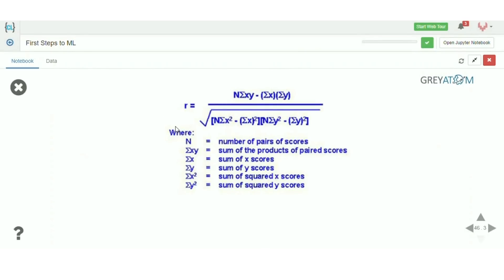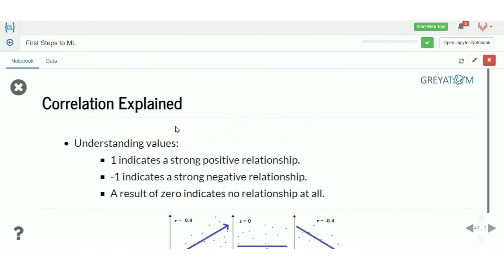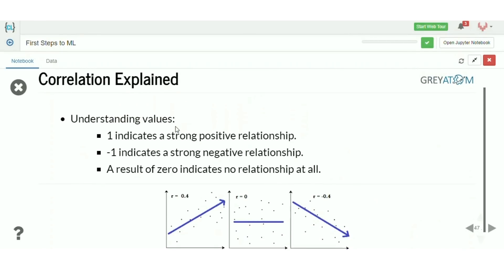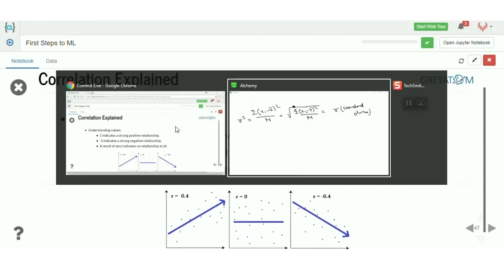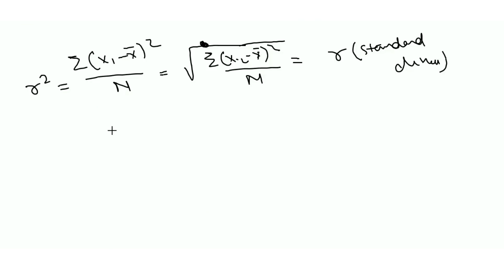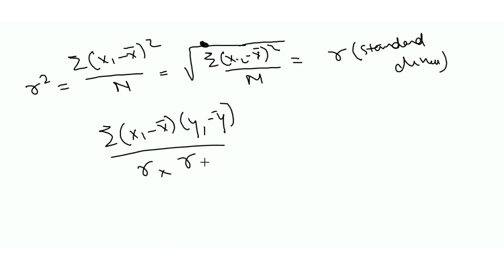Now let's understand the equation for calculating the correlation coefficient. Simply put, it's (x minus x̄) times (y minus ȳ), divided by sigma_x times sigma_y. There are two variables x and y in this formula.